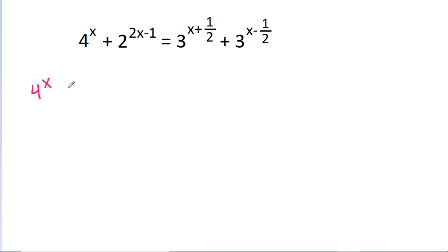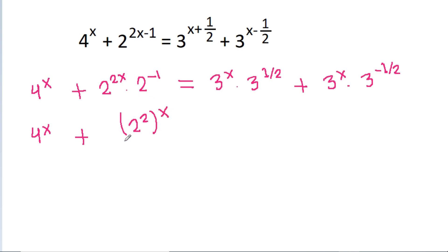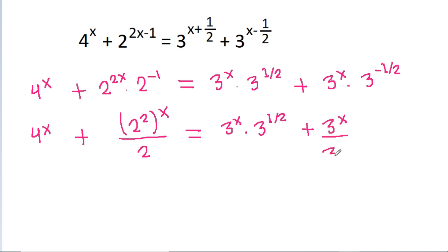So we have 4 power x plus 2 power (2x minus 1) is 2 power 2x into 2 power minus 1. This equals 3 power x into 3 power (1/2) plus 3 power x into 3 power (minus 1/2). And 4 power x plus 2 square power x into 3 power (1/2) plus 3 power x, where 3 power (minus 1/2) is 1 by 3 power (1/2).